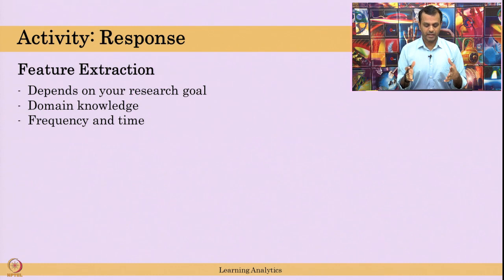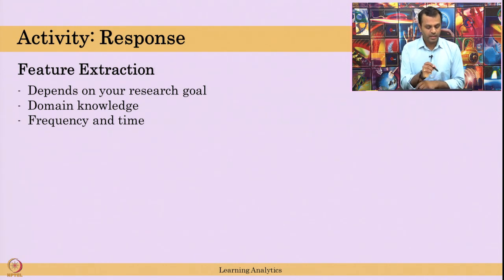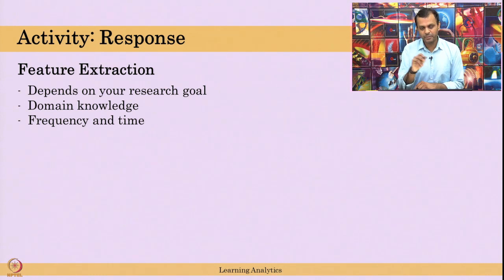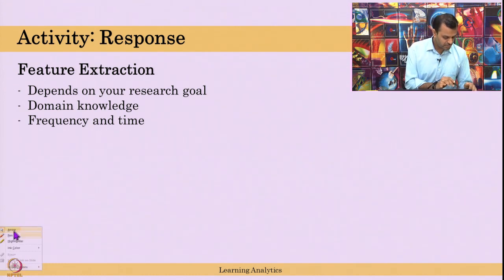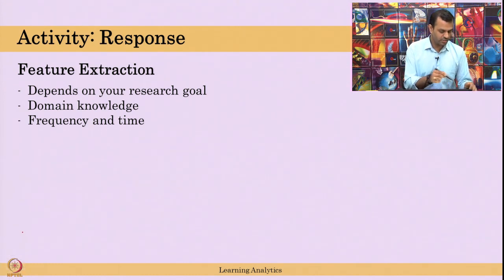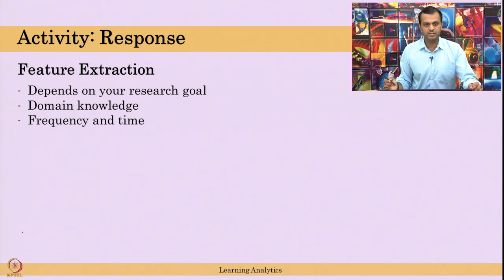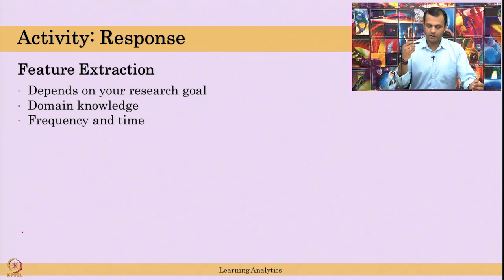If you are creating your own system and you know the students' interactions, the system means something. From your experience and expert knowledge in that particular domain, you might say students clicking these three buttons, or reading for five minutes before doing a quiz, might indicate something. A teacher can tell: if a student is coming only 40% of the time for attendance and not submitting three assignments, will he pass? The teacher says no — based on experience. This is domain knowledge.